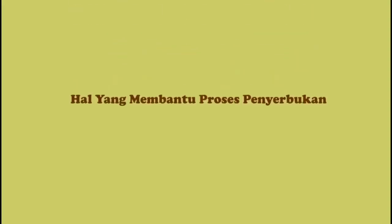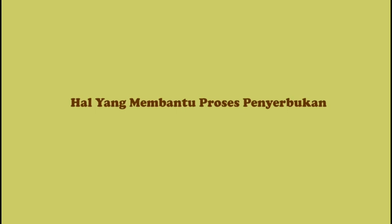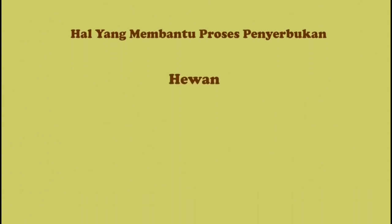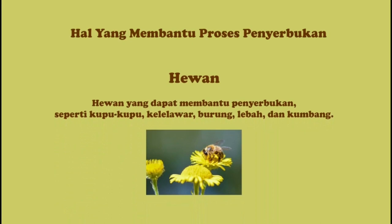Ada beberapa hal yang mempengaruhi proses penyerbukan pada tumbuhan. Faktor tersebut biasanya datang dari makhluk hidup lainnya dan juga alam. Yang pertama, hewan. Hewan yang dapat membantu penyerbukan seperti kupu-kupu, kelelawar, burung, lebah, dan kumbang. Contoh tumbuhan yang diserbuki oleh hewan antara lain bunga melati, mawar, durian, dan kembang sepatu.